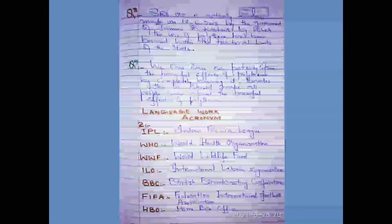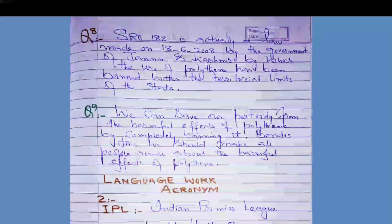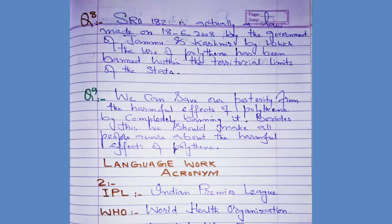Question number eight: What is SRO 182? SRO 182 is actually a government order — a law made on 18th July 2008 by the government of Jammu and Kashmir — by which the use of polythene has been banned within the territorial limits of the state.